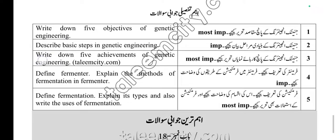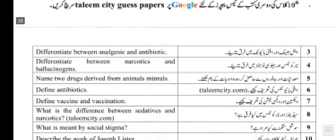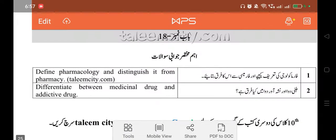For long questions in this chapter, objectives of genetic engineering — very important long question. Achievements of genetic engineering — very important long question. Fermentation and fermenter — very important long question according to the board examination. Next we have chapter 18.